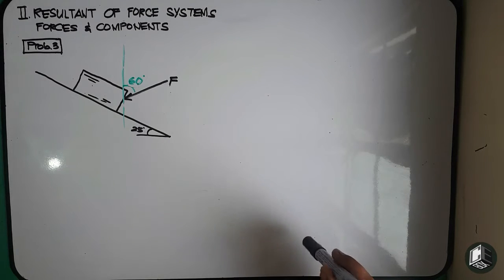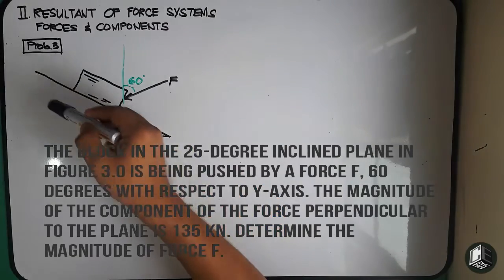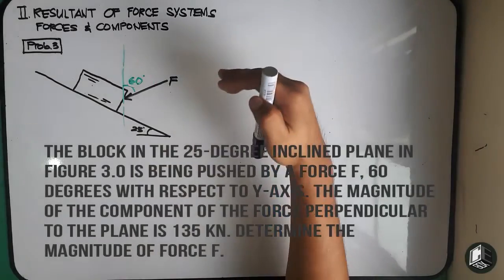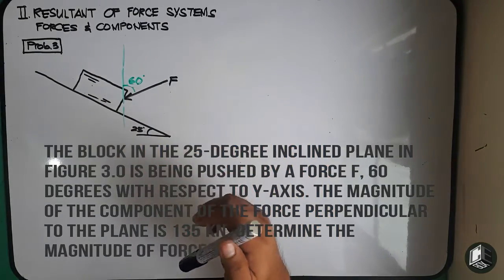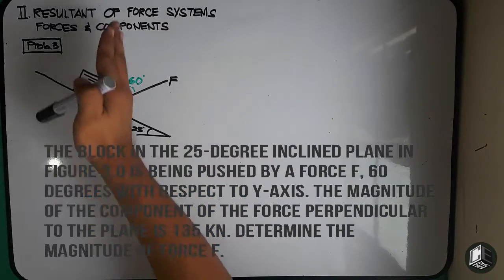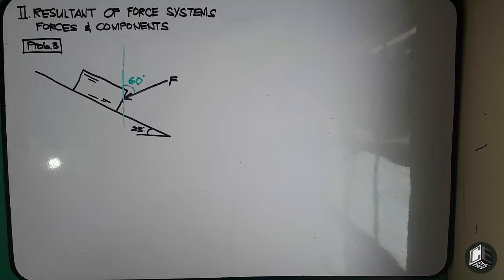This is problem number 3 for forces and components. The block on the 25-degree inclined plane in figure 3.0 is being pushed by a force F, applied 60 degrees with respect to the y-axis. The value of the component of the force perpendicular to the plane is 135 kN. Determine the value of force F.